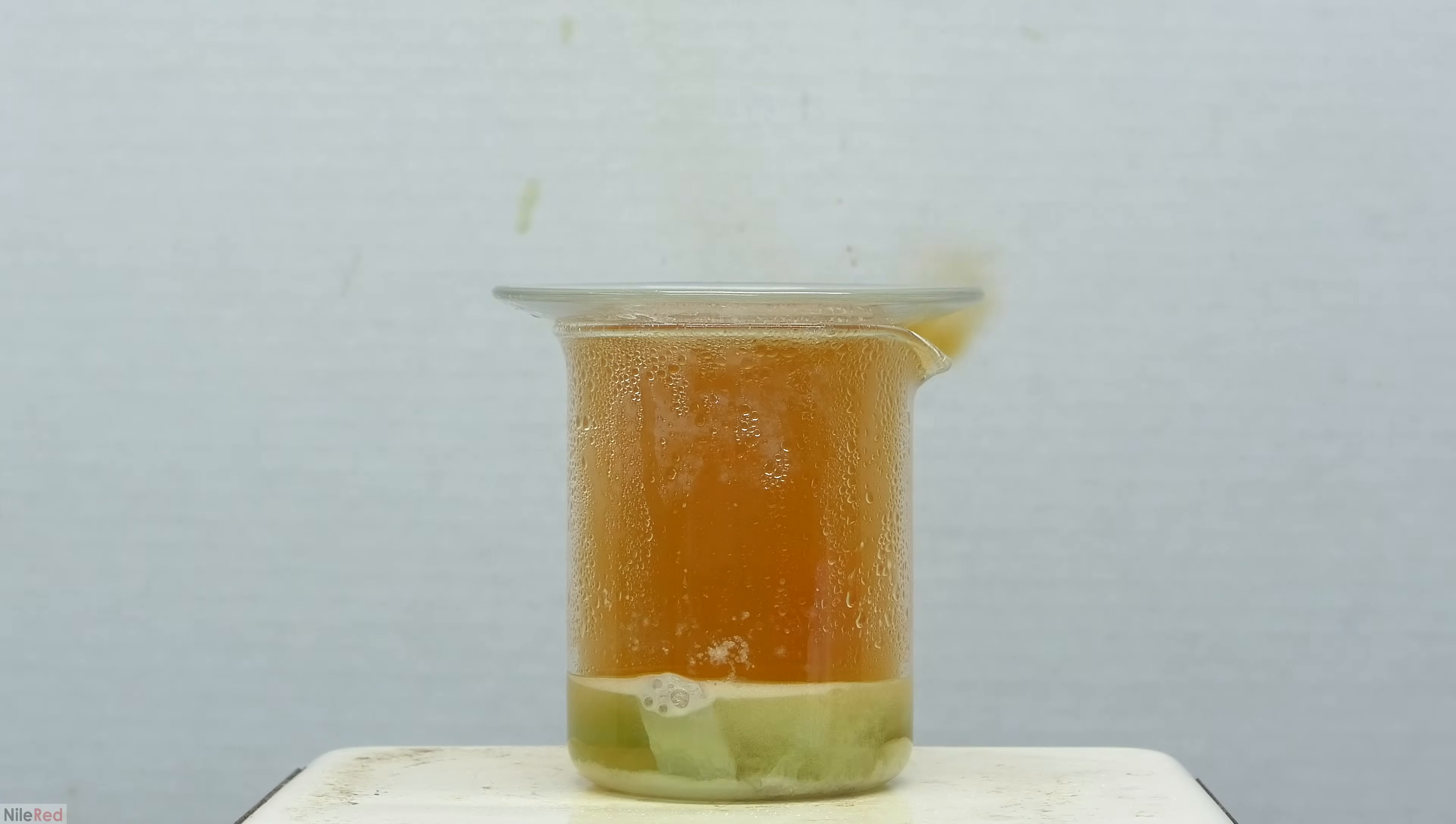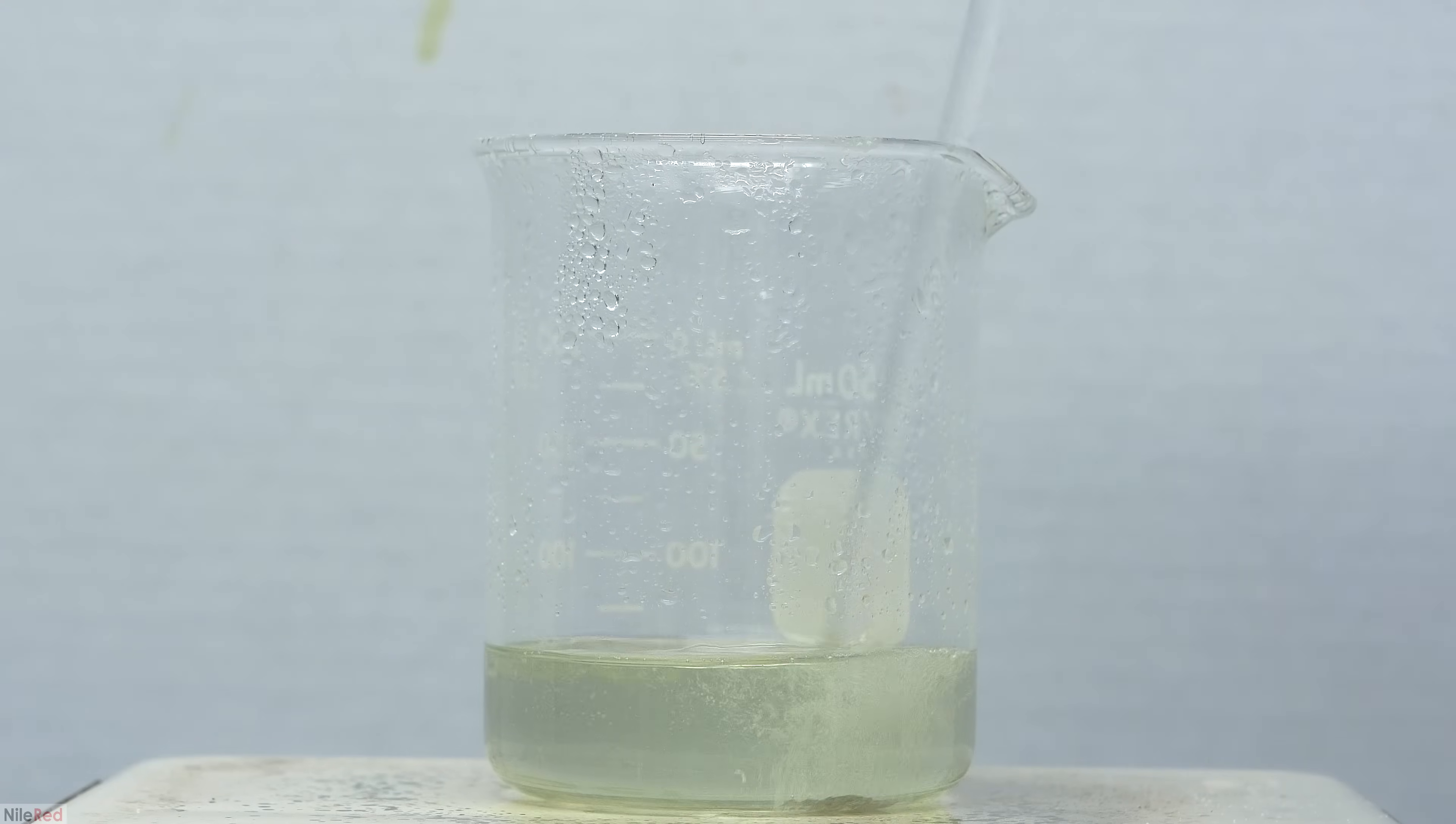As we get closer to the end, the solution becomes more colorless and the color of the nitrogen dioxide gas starts to fade. The most annoying part is when we're very close to the end and we have just some small pieces of silver left that seem to be taking forever to fully react.